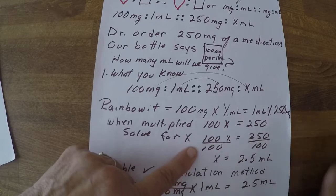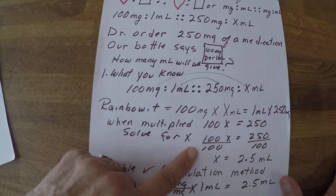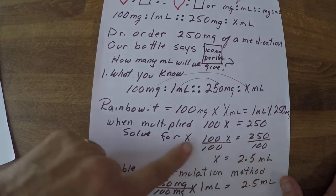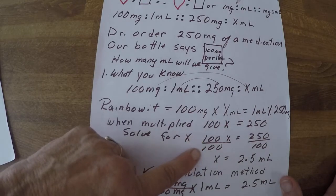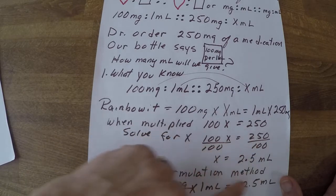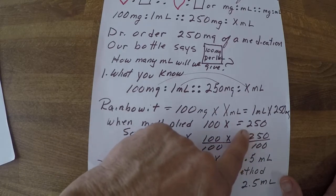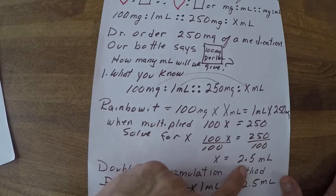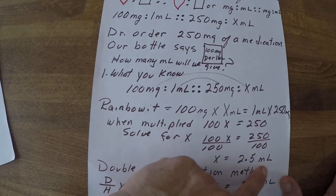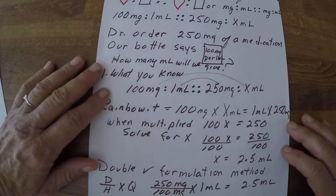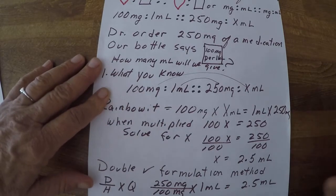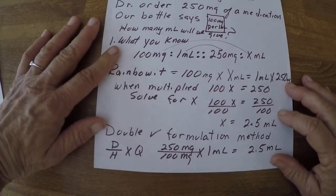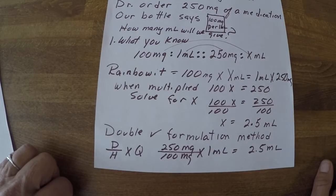We want x to stand alone, so we divide both sides by 100. 100x divided by 100 equals x. 250 divided by 100 is 2.5 ml. Pretty easy stuff — I love ratios. You can kind of see it a little more clearly than with the formula method.